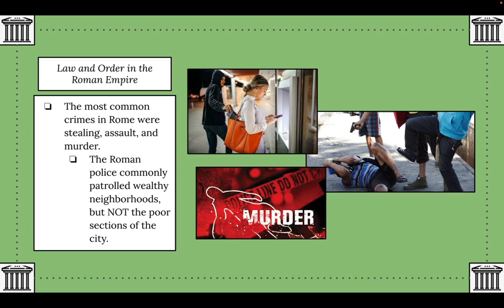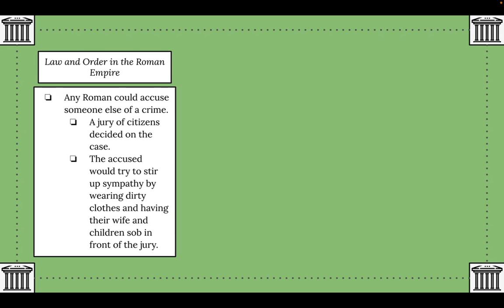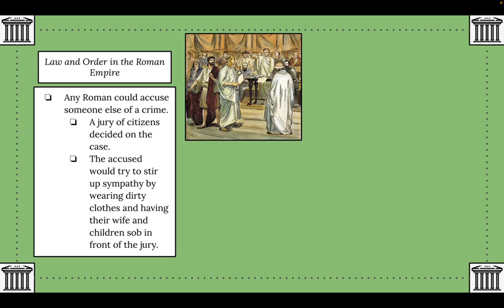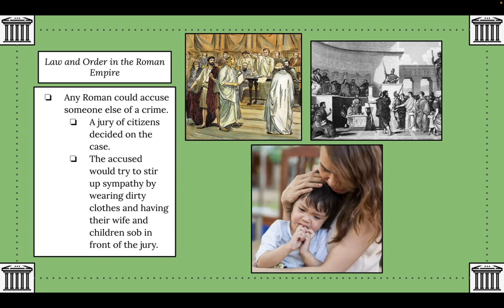The poor sections of the city were so dangerous that they would sometimes close them off at night. Here we see the Roman police force carrying their bundle of sticks with an axe in the center, symbolic of the right of Roman citizens to appeal a ruling against them. Any Roman could accuse someone else of a crime regardless of wealth. A jury of citizens decided cases, and the accused would often stir up sympathy by wearing dirty clothes or having their wife and children sob in front of the jury.